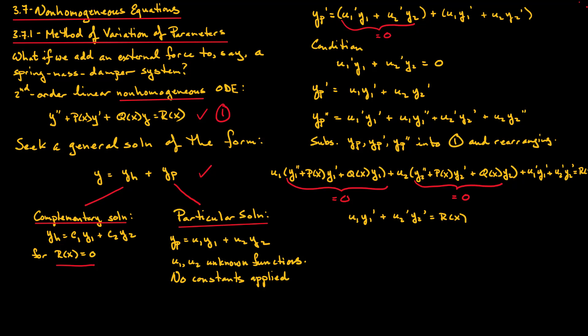Now recall, we need two equations to solve for U1' and U2'. The second equation we're going to use is this one over here. This gives us U1'Y1 + U2'Y2 = 0.